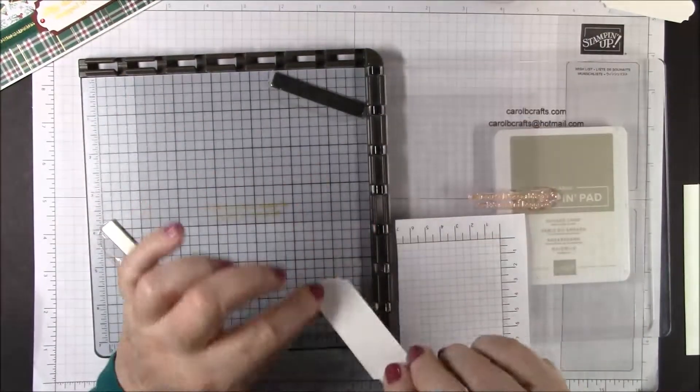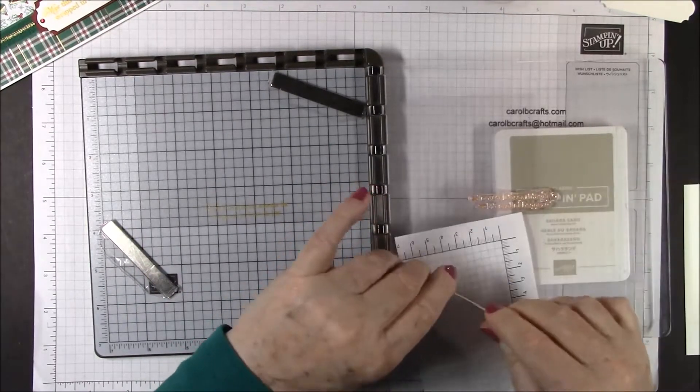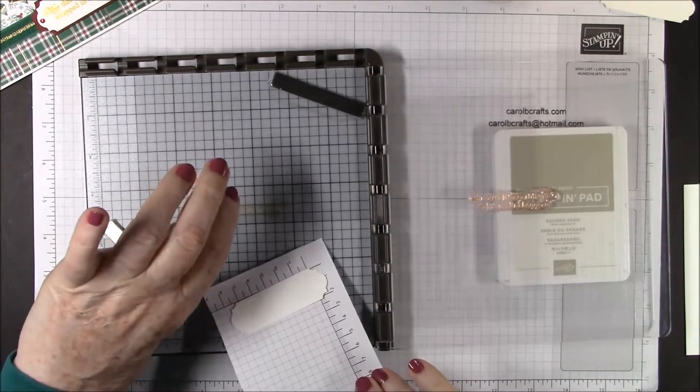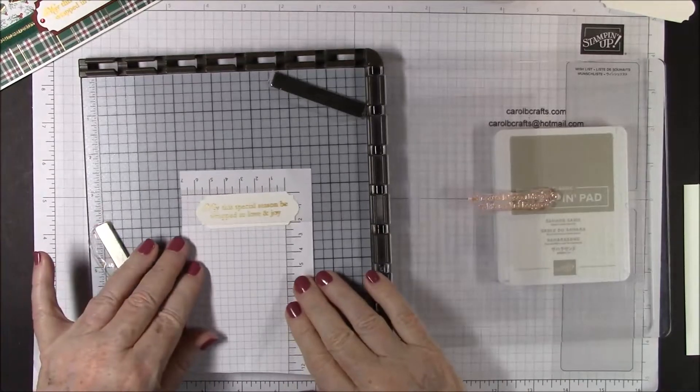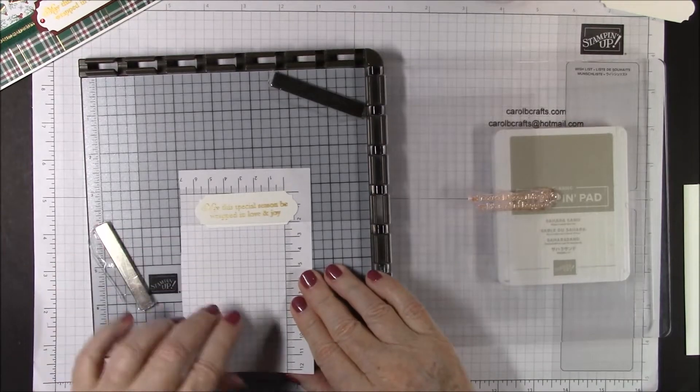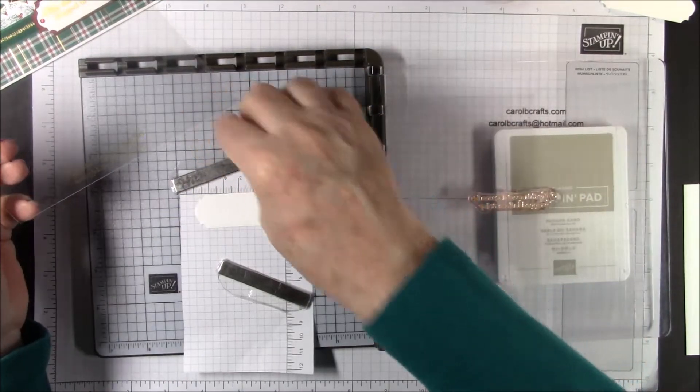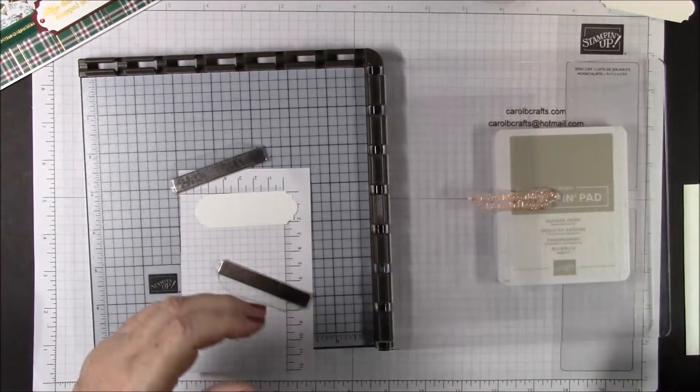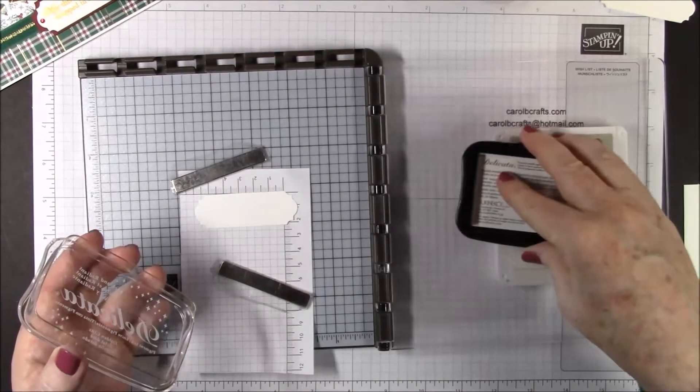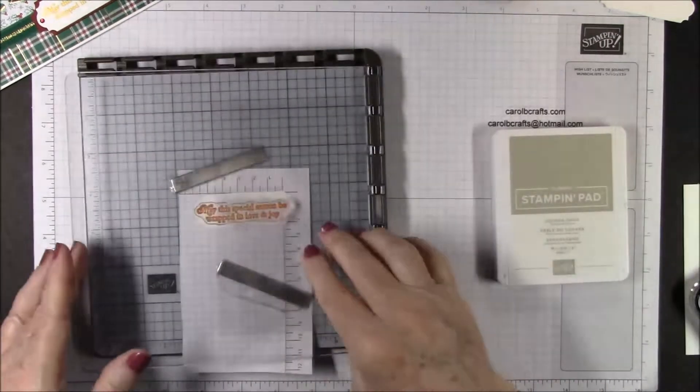Take your label and put a tiny bit of snail on the back, then put it on your scratch paper. We're going to slide this under our plastic and this is going to position our stamping right perfectly on our label. When you're happy with the placement, hold down your paper with your magnets.